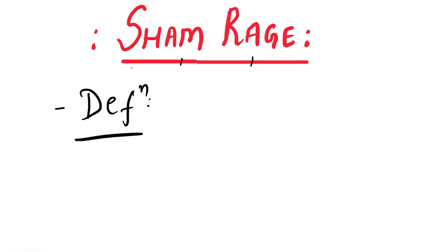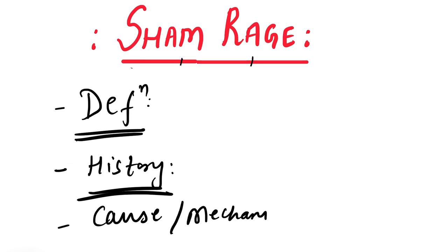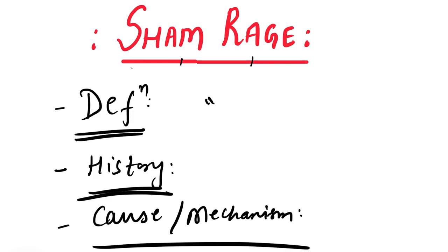First, we will try to know the definition or the exact meaning of the term sham rage. Then we will try to know some historical background about this condition — how it was introduced. And finally, we will try to know what are the causes or the mechanism of this condition sham rage. It is important in the subject physiology.